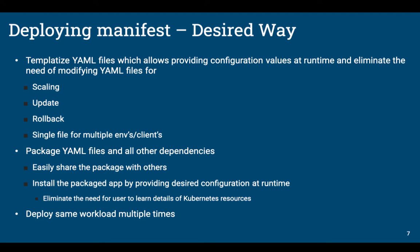You also want to package the YAML files and other dependencies so you can easily share the package with others — something you couldn't do the kubectl way — and install the packaged app by providing the desired configuration at runtime rather than always maintaining the config manually. You could even use the same config files to deploy multiple times. With kubectl, if your manifests have no changes it won't apply anything, but with Helm you just change the chart name and deploy again even without changes.